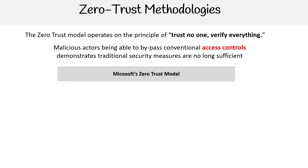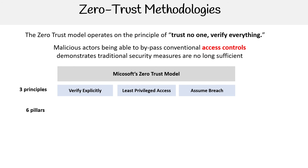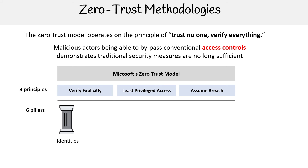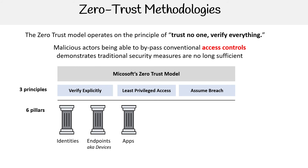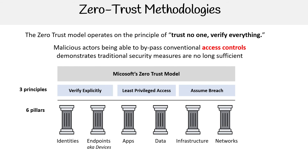The Microsoft Zero Trust model is based on three principles and six pillars. The three principles are: verify explicitly, least privileged access, and assume breach. For the six pillars, we have identities, endpoints — an easier way of thinking about endpoints is just think of them as devices — apps, data, infrastructure, and networks.